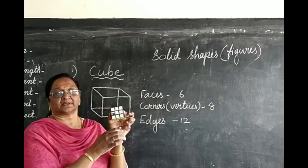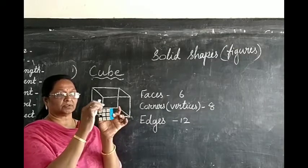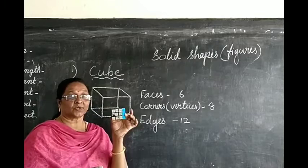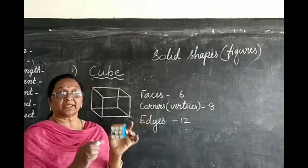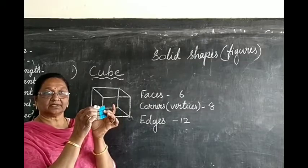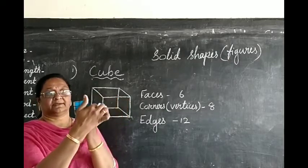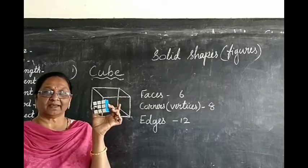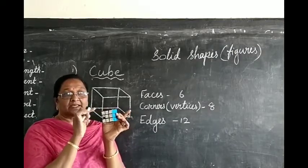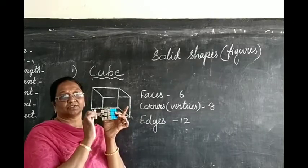And how many corners is it having? Corner means this joining point. One, two, three, four, five, six, seven, eight — eight corners or vertices. And how many edges is it having? This is called the edge — these are the line segments. Twelve edges: four here on top, four at the bottom, and four on the sides. So a cube has six faces, eight vertices or corners, and twelve edges.